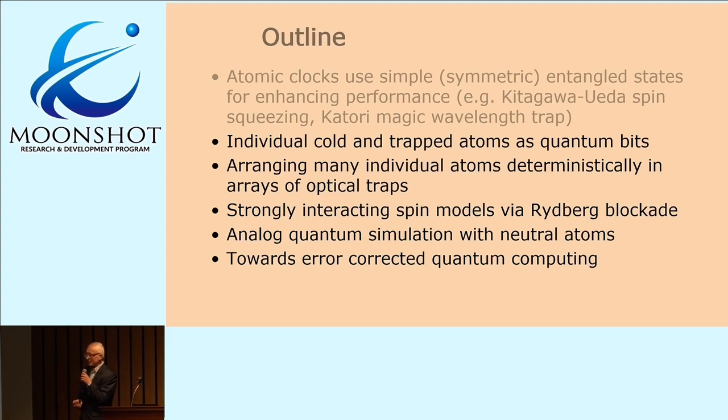Atomic clocks is an area where Japanese researchers have played a prominent role. Atomic clocks now can be entangled to increase the atomic precision, but they use relatively simple symmetric entangled states, for instance, as achieved by the famous Kitagawa Ueda proposal on spin squeezing many years ago, which is now starting to become a reality in the best atomic clocks.